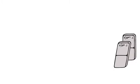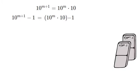10 to the power of m plus 1 is the product of one more 10 than 10 to the power of m. So 10 to the power of m plus 1 minus 1 is equal to 10 to the power of m times 10 minus 1. The 10 I've highlighted here is of course equal to 9 plus 1, so we can substitute 1 for the other.